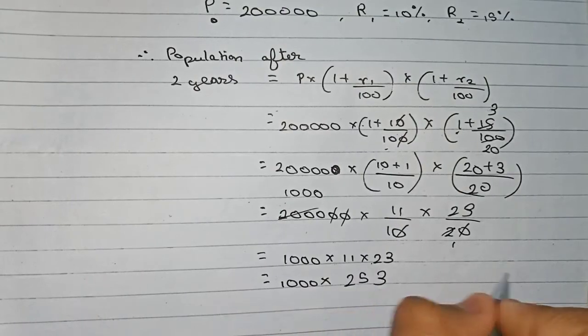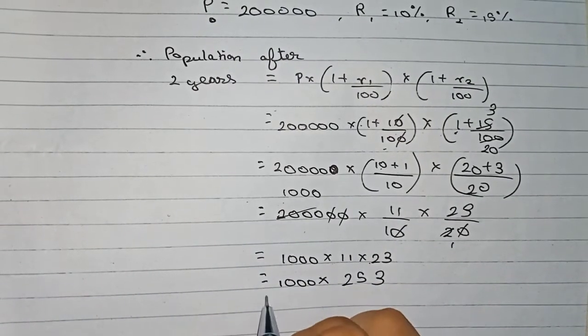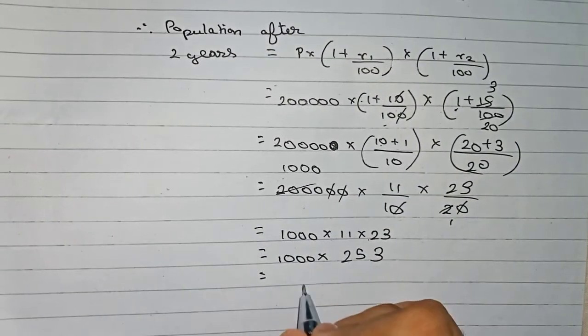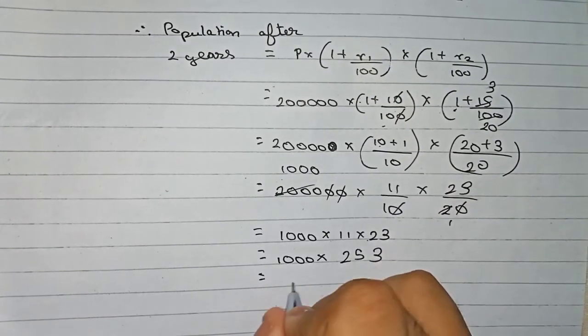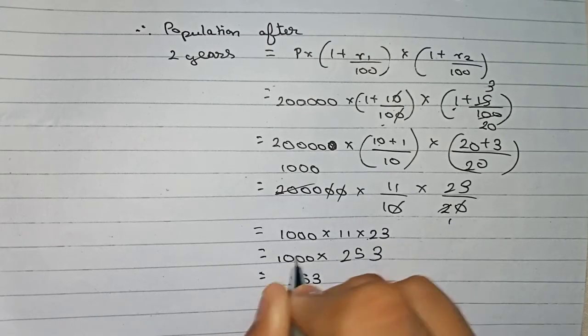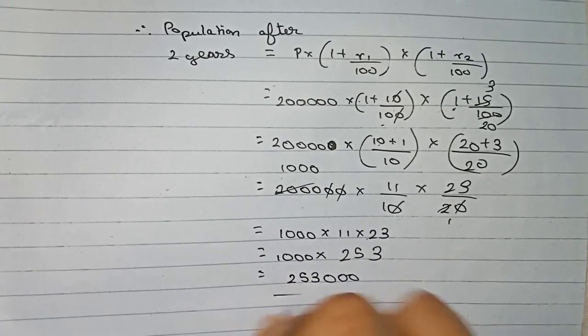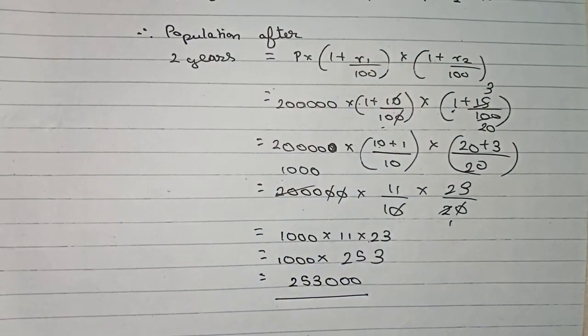So now finally, if you multiply it by 1000, three zeros will be added to this number, that is 253: 2,53,000. Therefore, this will be the population after two years.